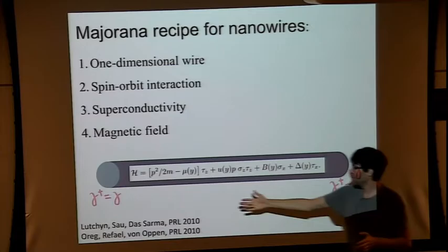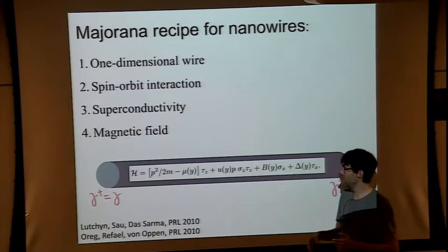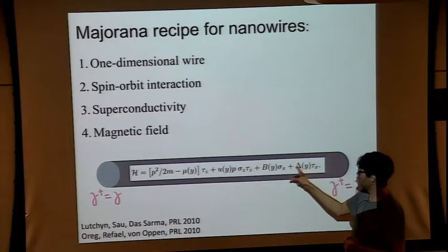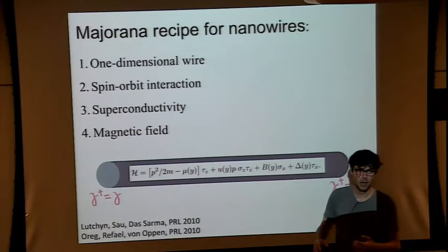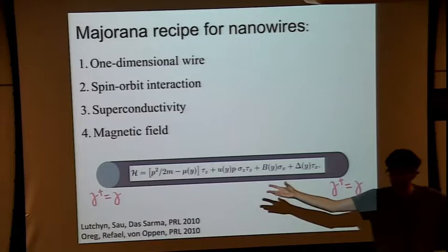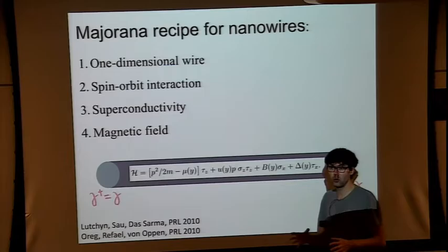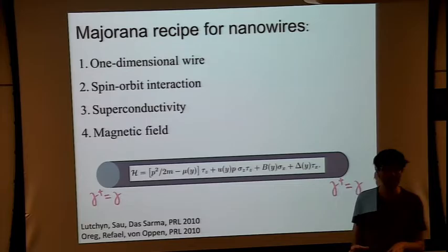Basically what these papers said is: if you create such a system and set the parameters just right — the magnetic field, the superconductivity, the spin-orbit term, and importantly the chemical potential — then the Majorana fermions, which are these gamma operators that are their own antiparticles, will pop up at the ends of the system. It's a finite system, and at the ends there will be two unpaired Majorana fermions, just like Kitaev predicted.